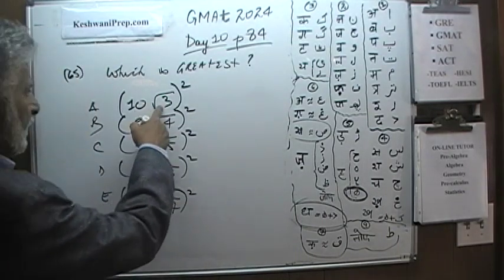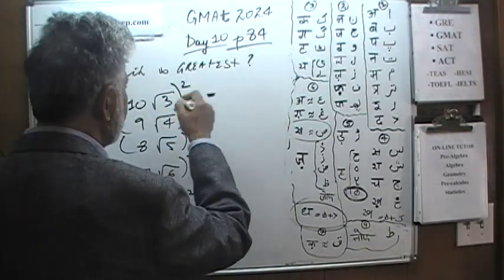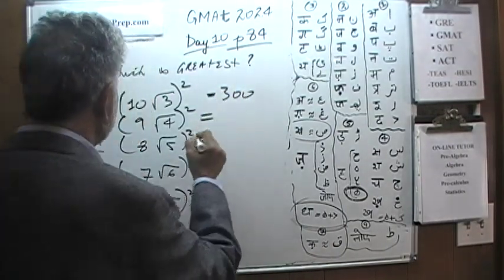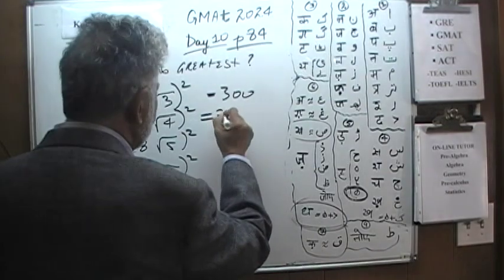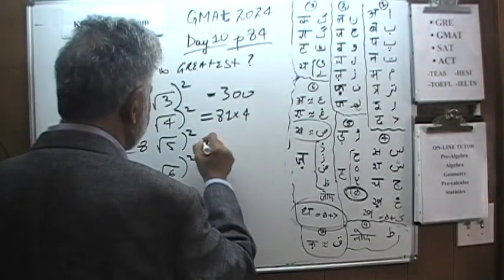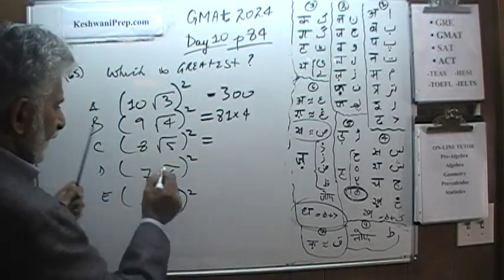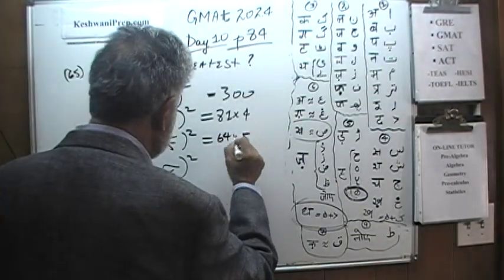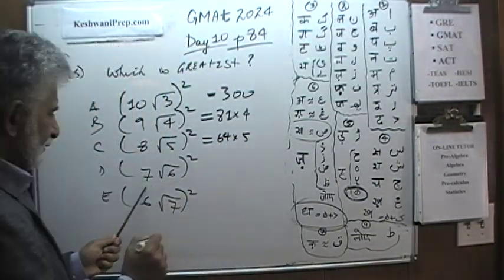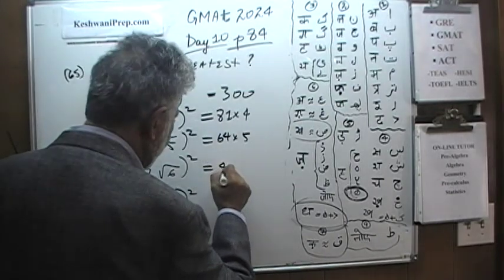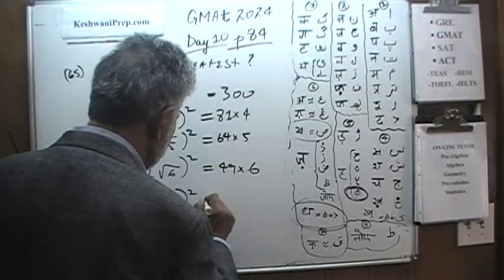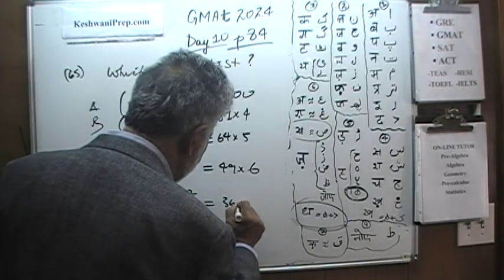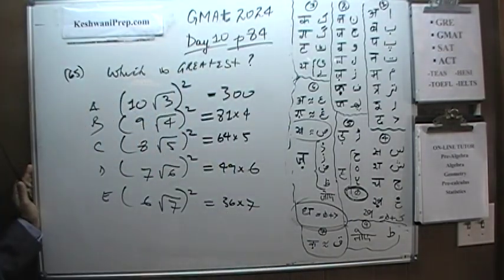Squaring each expression: 10 squared is 100, times 3 gives 300. Then 9 squared is 81, times 4 gives 81×4. Then 8 squared is 64, times 5 gives 64×5. Then 7 squared is 49, times 6 gives 49×6. And finally 6 squared is 36, times 7 gives 36×7. Now we just have to figure out which of these products is greatest.